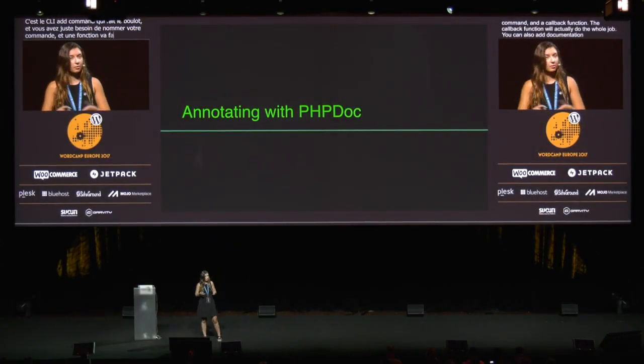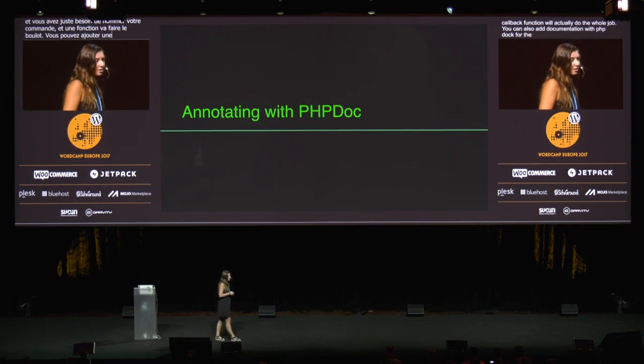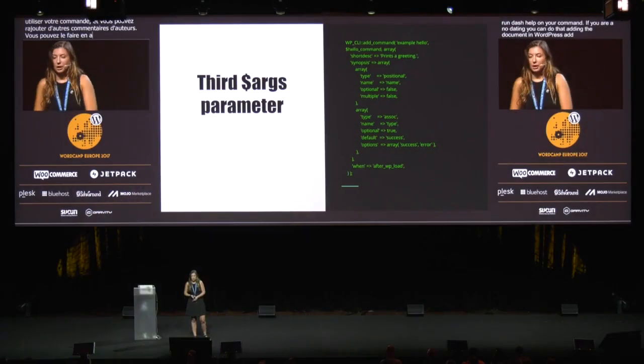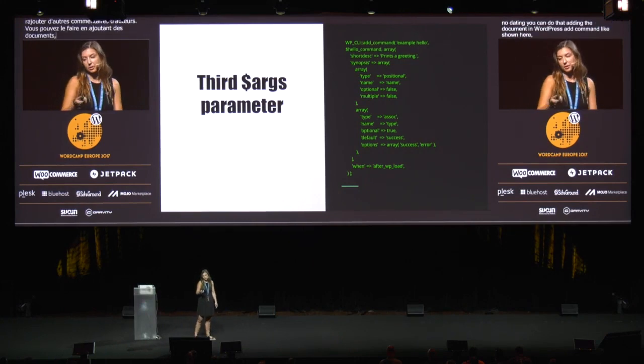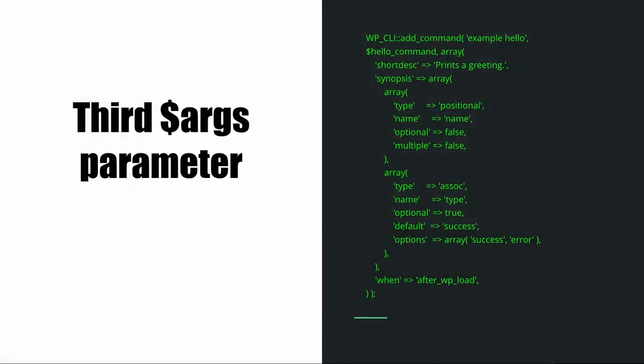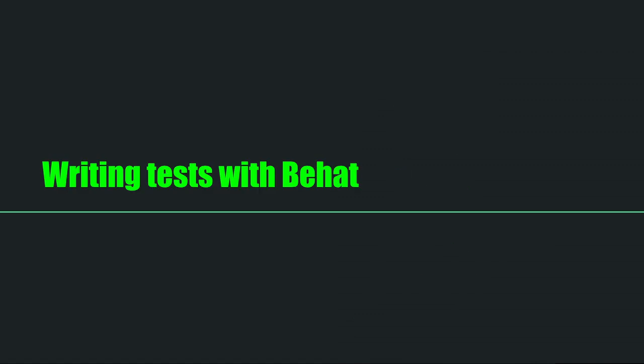The callback function does the whole job. You can also add documentation with PHPDoc for your users: a short description, a long description that appears when they run --help on your command. Alternatively, you can do that by adding a third argument in WP add command, as shown here, and add all the documentation — like the short description — inside the command.